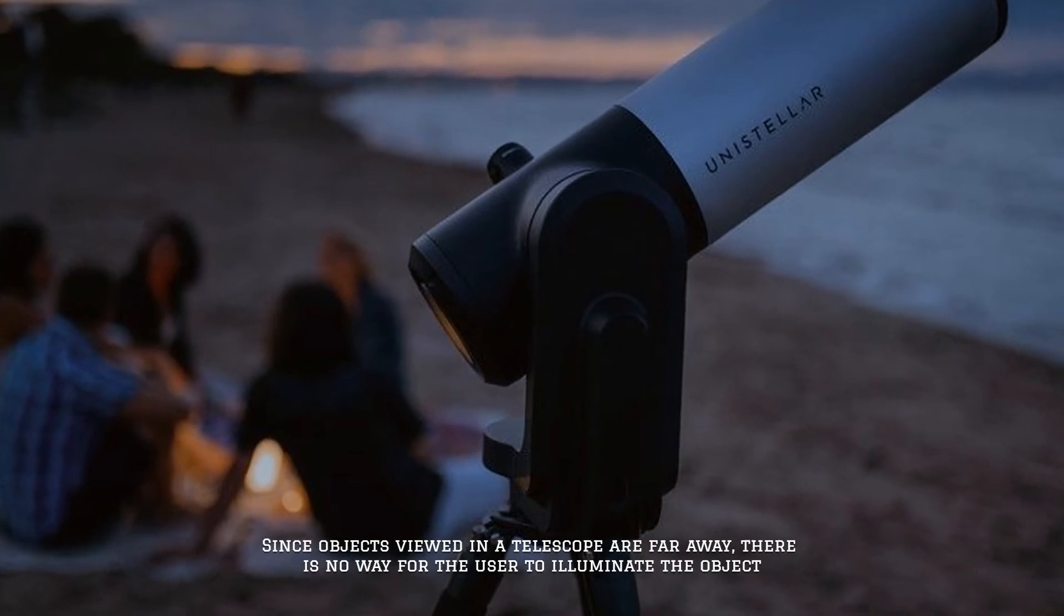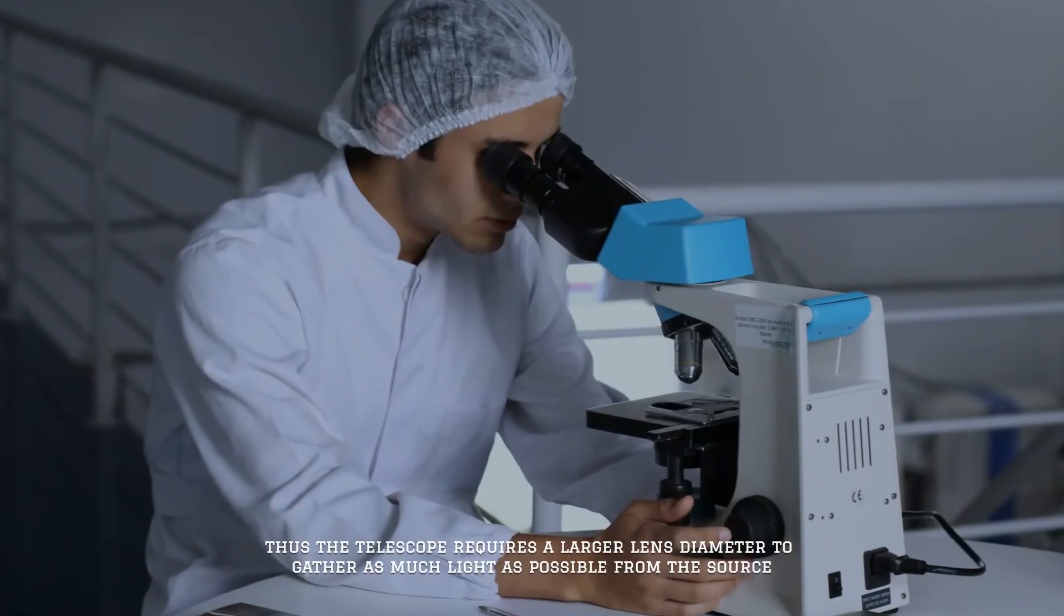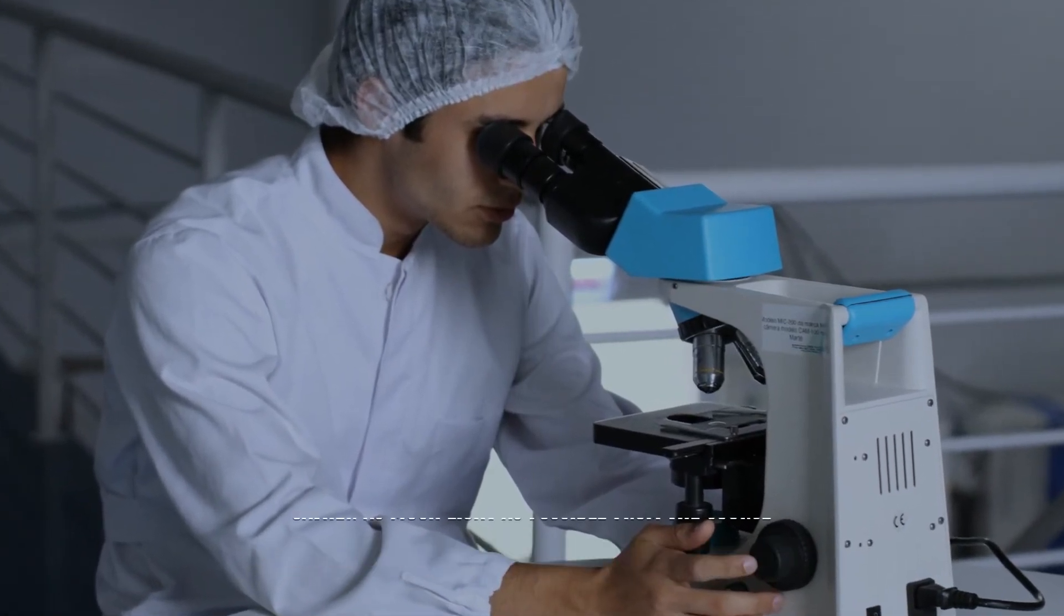Since objects viewed in a telescope are far away, there is no way for the user to illuminate the object. Thus, the telescope requires a larger lens diameter to gather as much light as possible from the source.